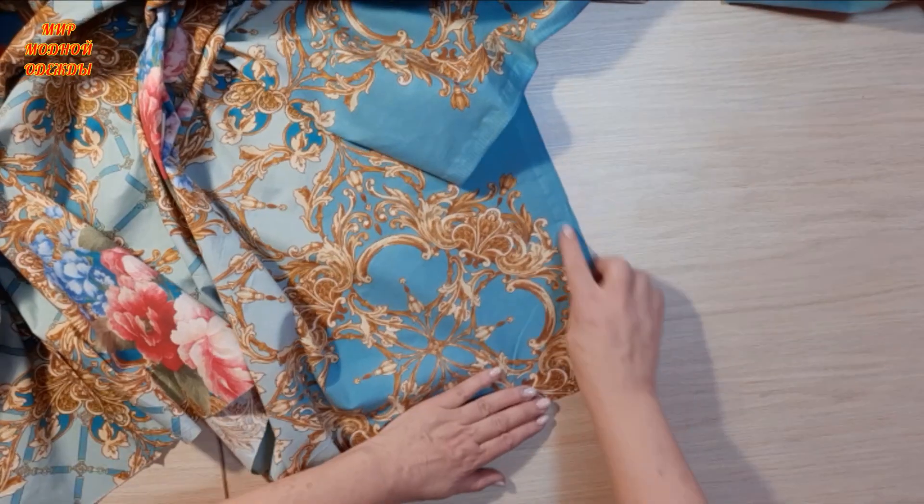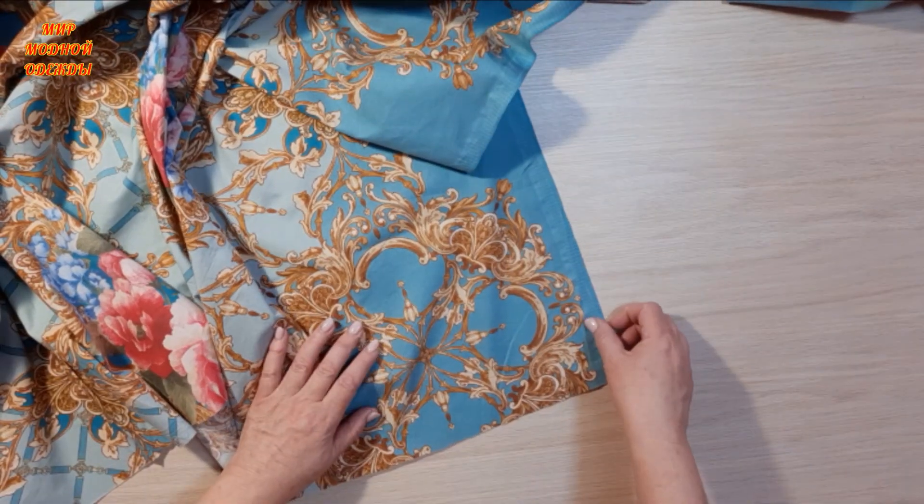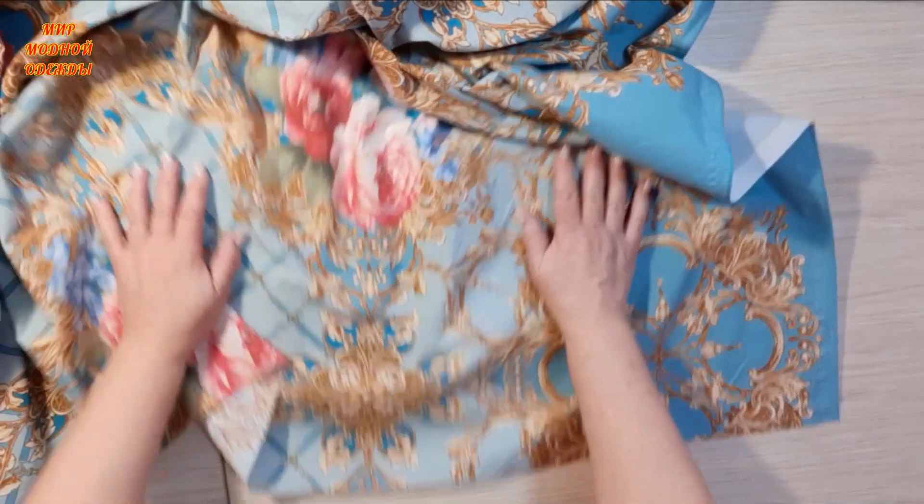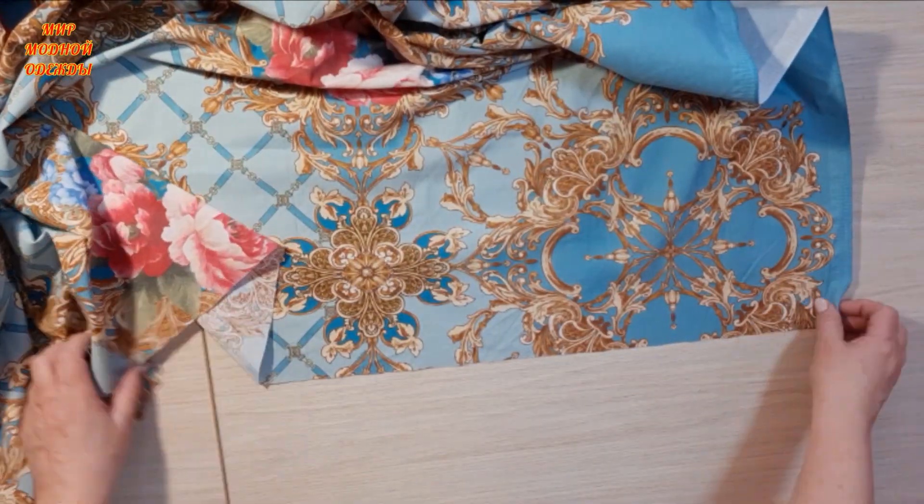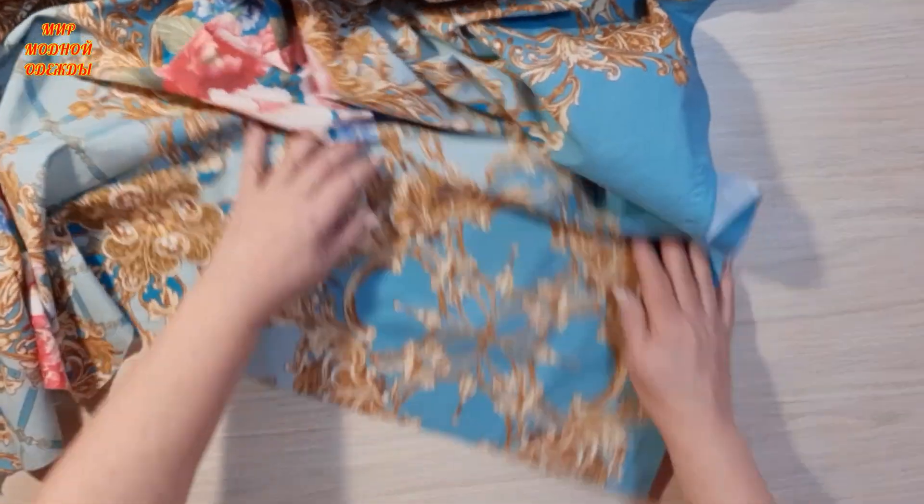Here we have the selvage. It will be on the short side, and on the long side we have the raw edge. We process it.